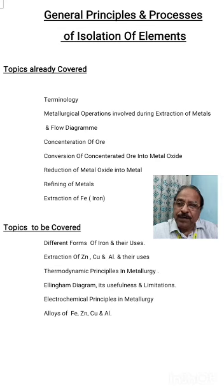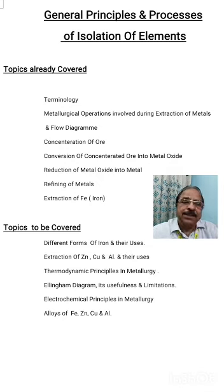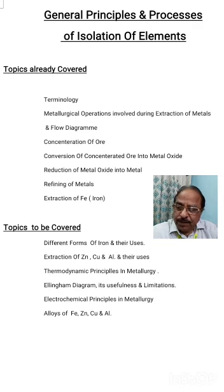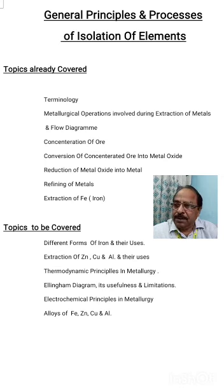That means methods used for removal of gangue — the unwanted material. We have also discussed conversion of concentrated ore into metal oxide, and as you can recollect, we discussed roasting and calcination. After that, we discussed various methods of reduction of metal oxide into metal, along with the various methods involved. And lastly, we discussed how we can refine the crude metal that we obtain.